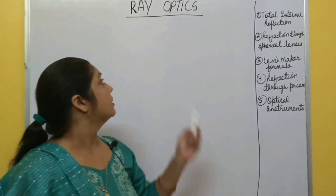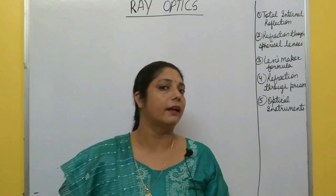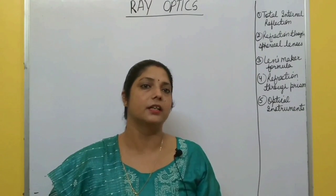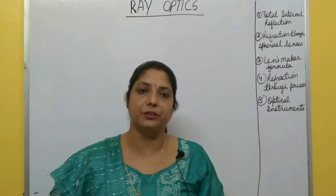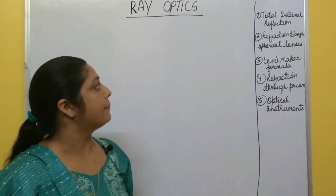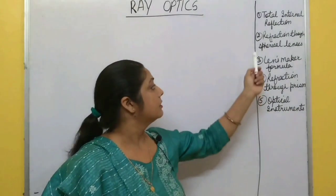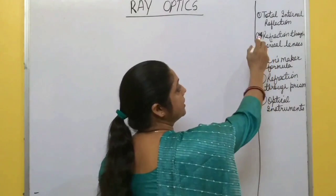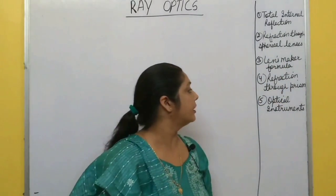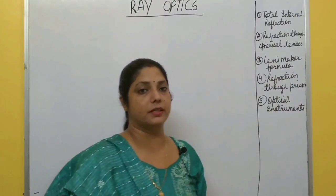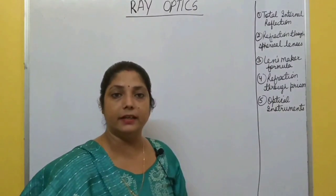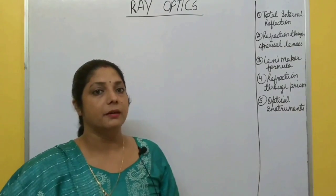In this Ray Optics chapter, some portions are deleted — like reflection through mirror, laws of reflection, scattering, blue color of the sky — so no need to study these topics from the board examination point of view. Some topics are very important and questions are generally asked from them: total internal reflection, refraction through spherical lenses, lens maker's formula, refraction through prism, and optical instruments. These cover three-mark and five-mark questions.